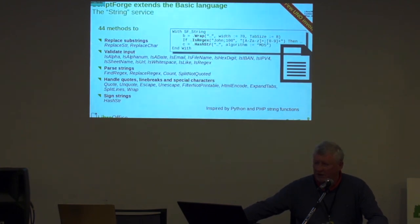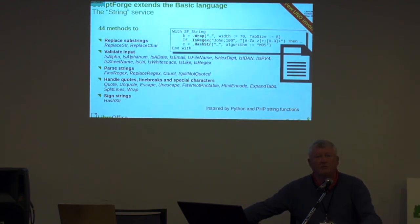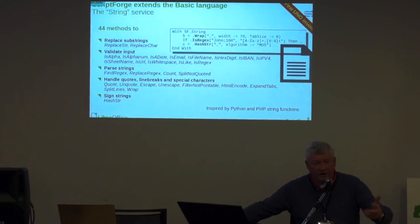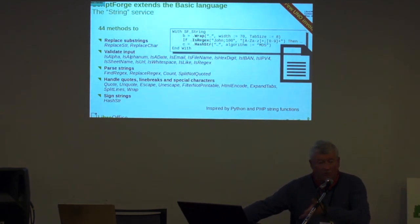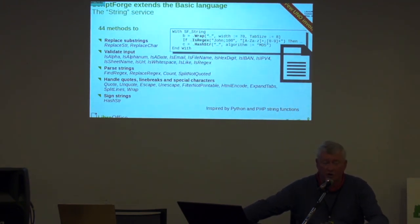Same idea, this time for the String service. The String service — you have built-in in BASIC a number of things that allow you to find a substring within a string. But if you start talking about how do I find a regular expression within a string, it's something else. We were convinced that it was necessary to have, for input validation, to parse a number of strings, to be able to import a CSV file — that kind of things — a number of primitives. And these primitives include, for instance, hashing a string. We use Python to hash — it's a module in Python available with LibreOffice — to produce the hash code of a string or of a file.